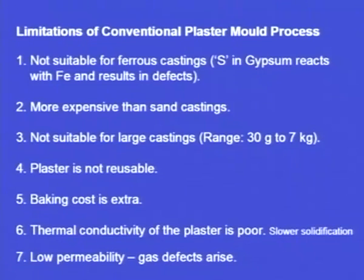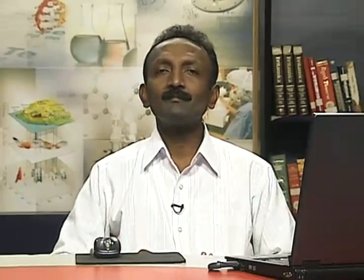Limitations of the conventional plaster moulding process: this process is not suitable for making ferrous castings because sulphur is present in the gypsum — the plaster of Paris — and this sulphur reacts with iron and leads to defects. So plaster of Paris moulds can be used only for non-ferrous castings. This process is also more expensive.